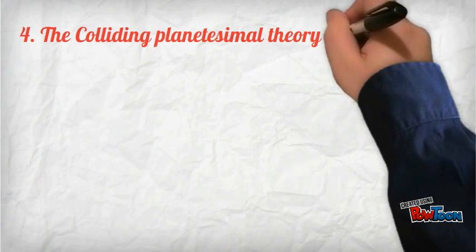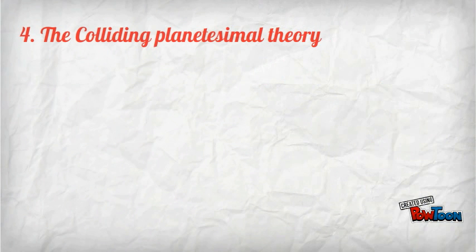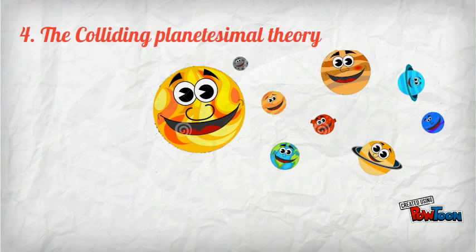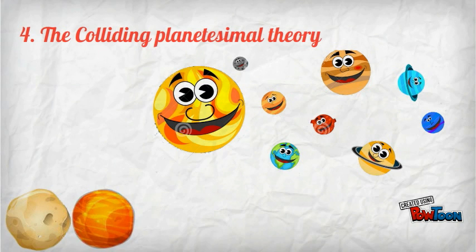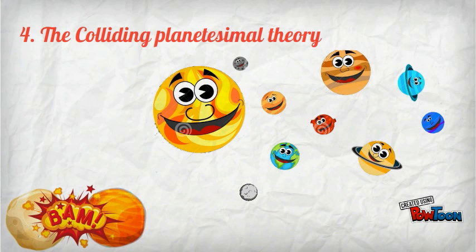The fourth theory is the Colliding Planetesimal Theory. Some scientists have suggested that the moon condensed from the debris produced by planetesimals, the building blocks that grew into Mars, Earth, and other full-fledged planets, as they slammed into each other shortly after the solar system formed.